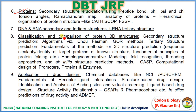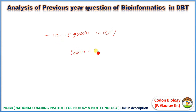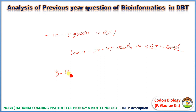Let's do an analysis of previous questions in DBT. If we analyze previous Bioinformatics questions in DBT, you will find that every single year there are 10 to 15 questions, and you can score 30 to 45 marks in DBT from Bioinformatics alone. In this 3 to 4 video lecture series of MLP, I'll try to give you important topics, concepts, and question-solving tricks in Bioinformatics.